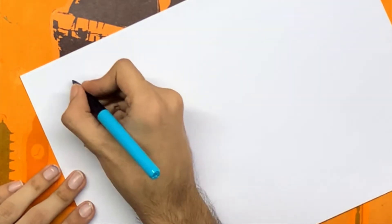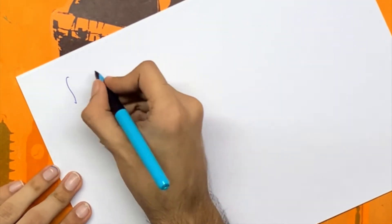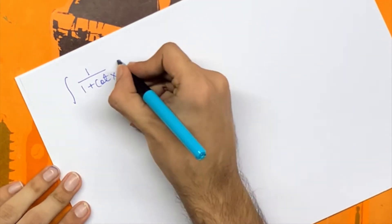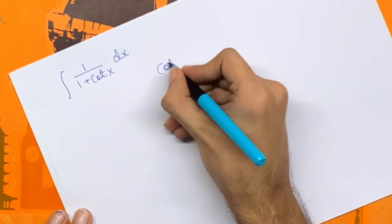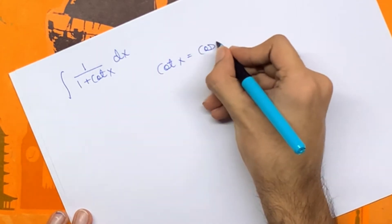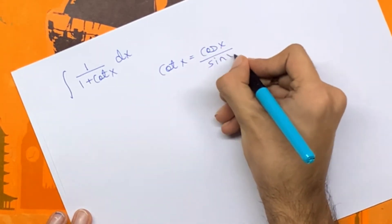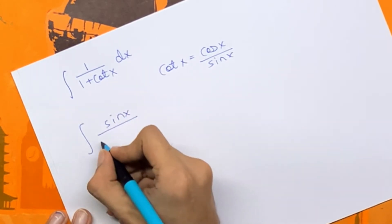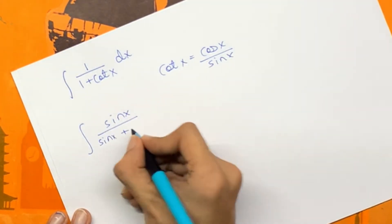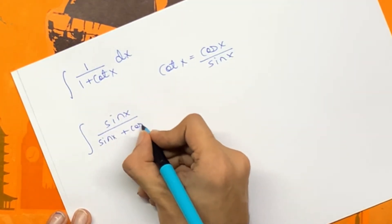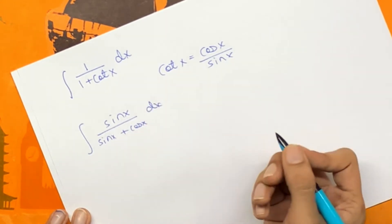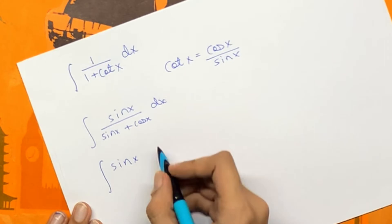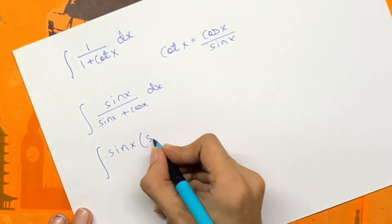Our second integral is the integral of 1 upon 1 plus cot x dx. We can write cot x as cos x upon sin x, giving us sin x upon sin x plus cos x dx.